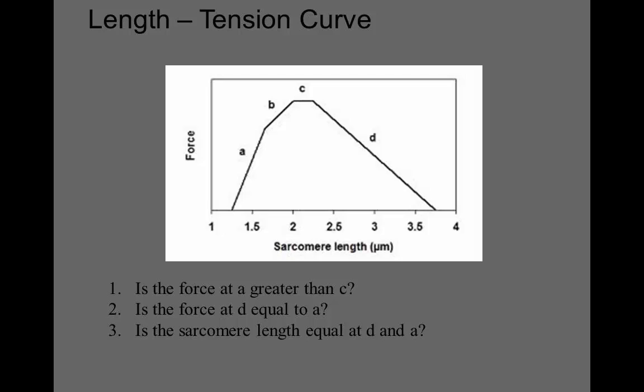Generally speaking, if you put a horizontal line through D and A, the force at A is about the same level as the force at region D. However, number three asks, is the sarcomere length equal at D and A? And that's no. So basically it's illustrating that at short sarcomere length you generate less force, and at longer sarcomere length you generate less force. And the key is to explain why that occurs.